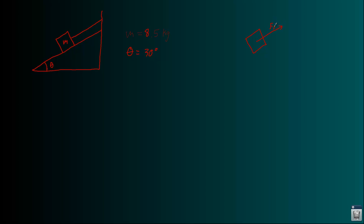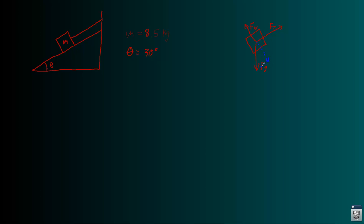First thing: free body diagram. Let's do it right here. The block, redrawn — tension is pulling up that way, gravity straight down, normal force perpendicular to the plane. And in a different color, let's just make the components of gravity.